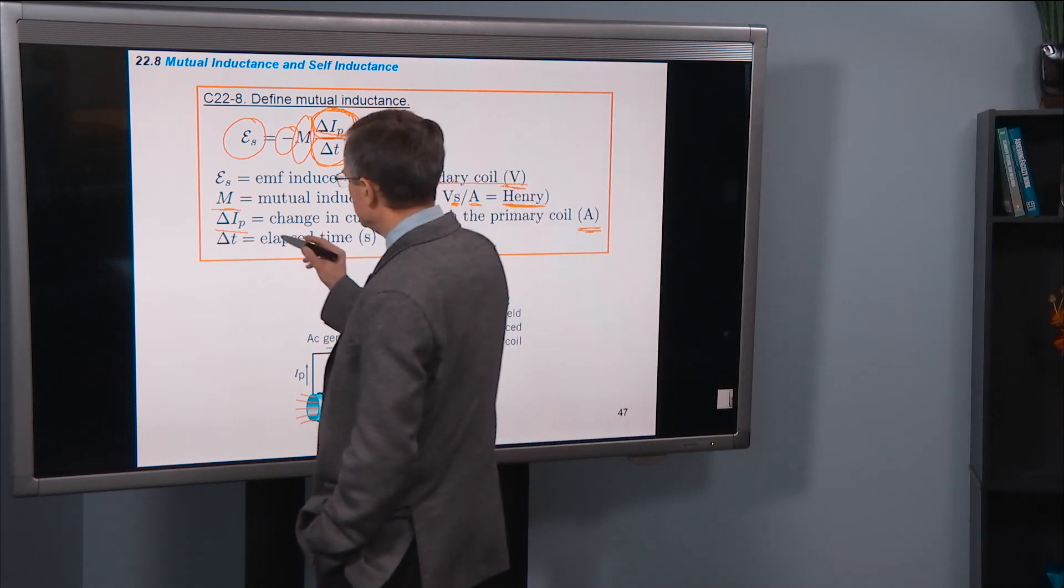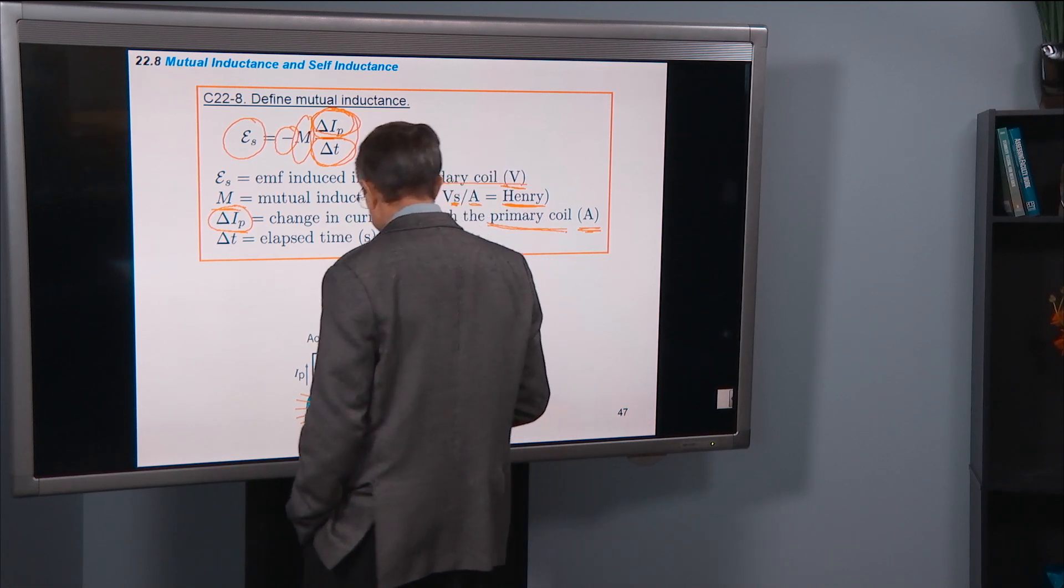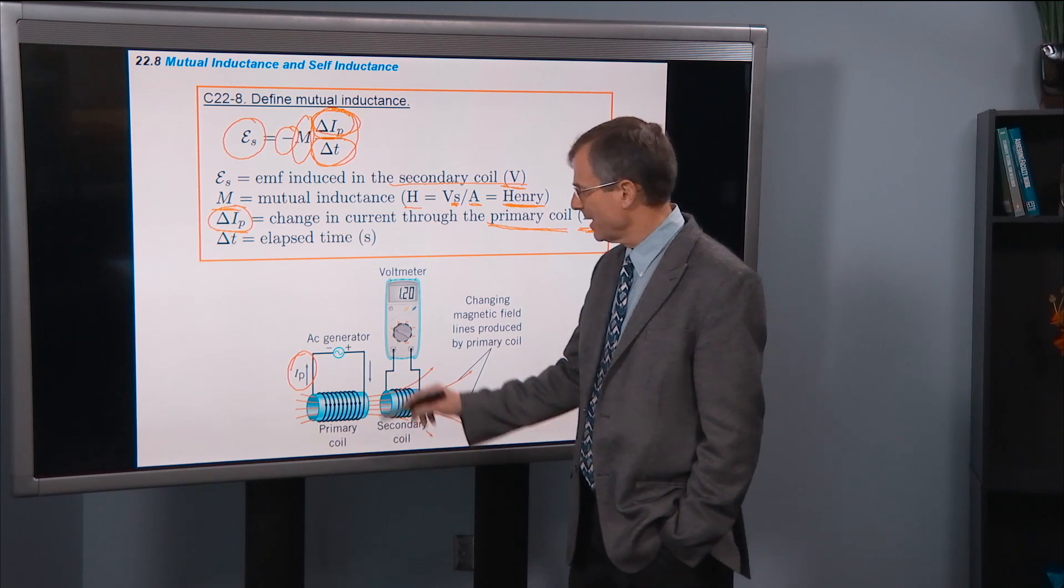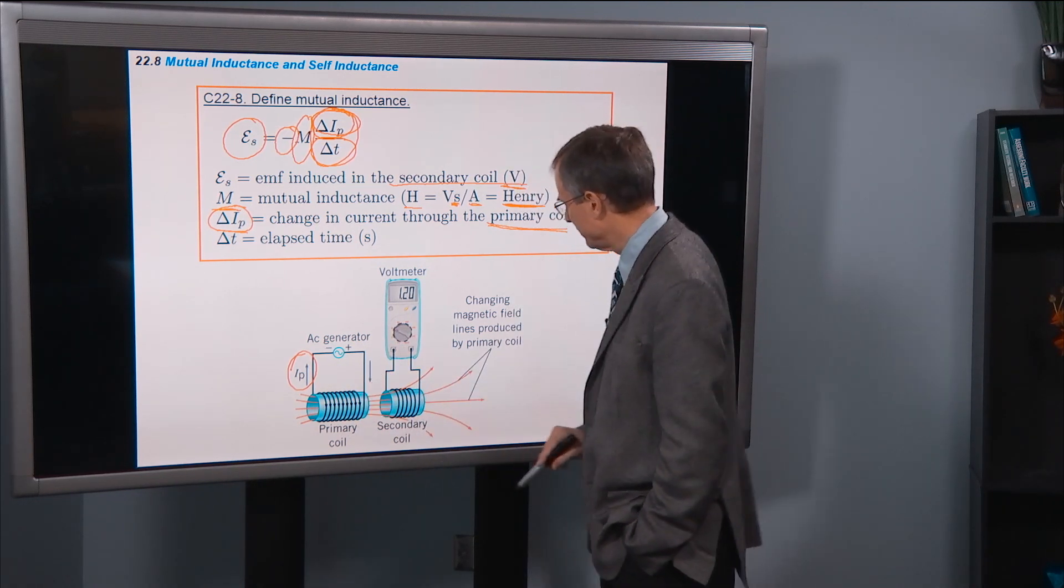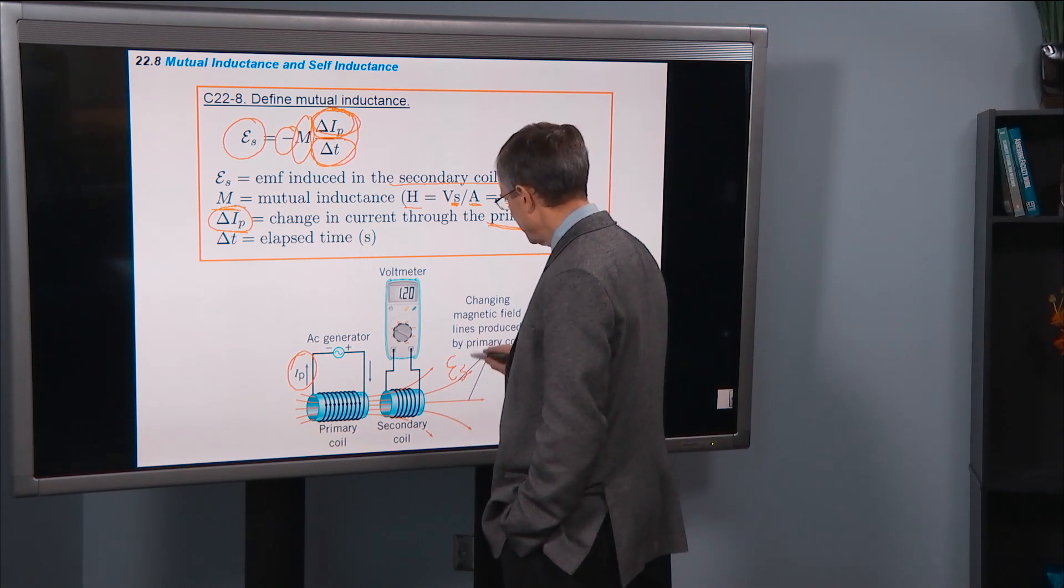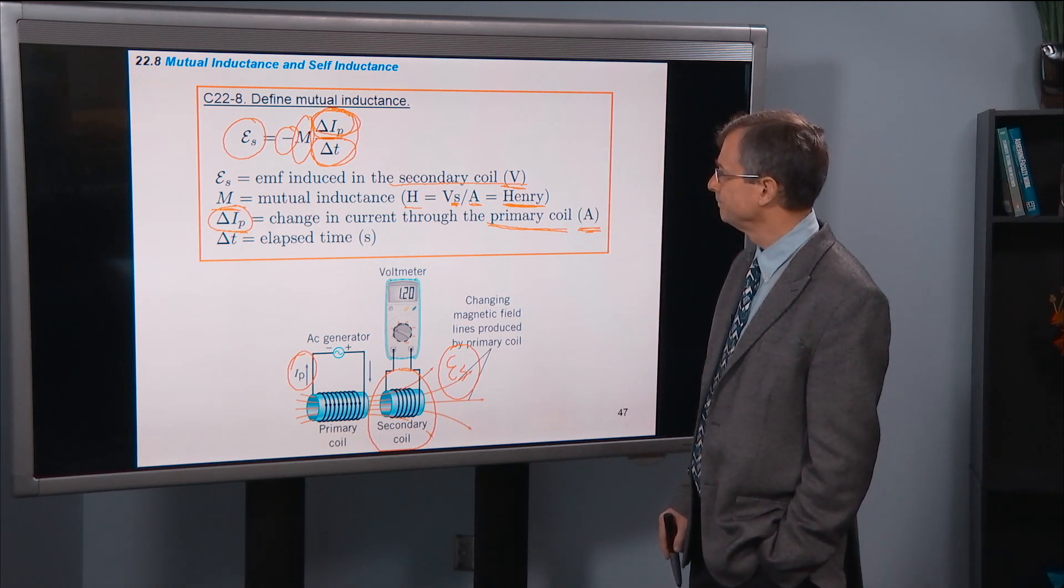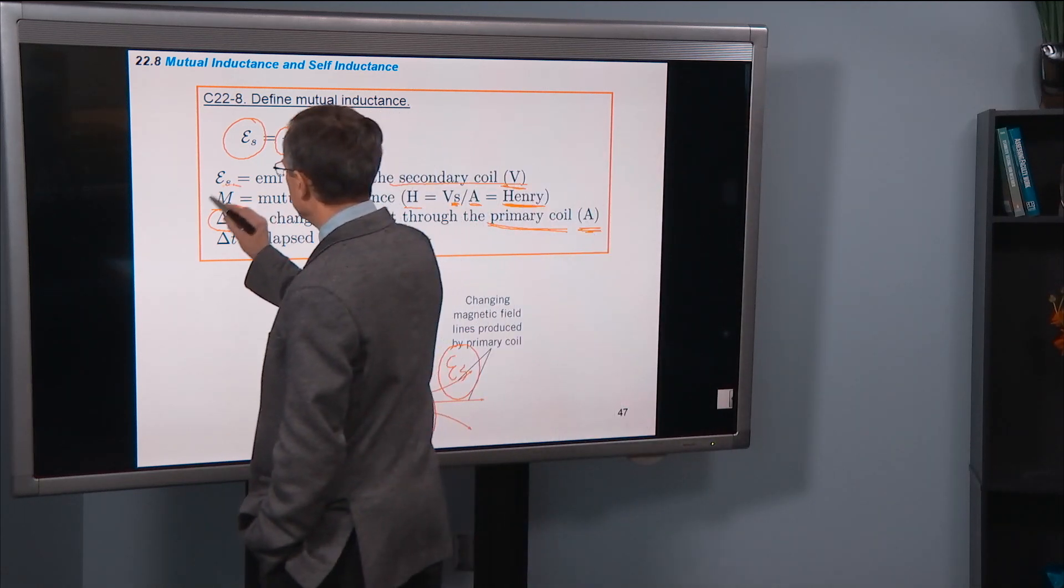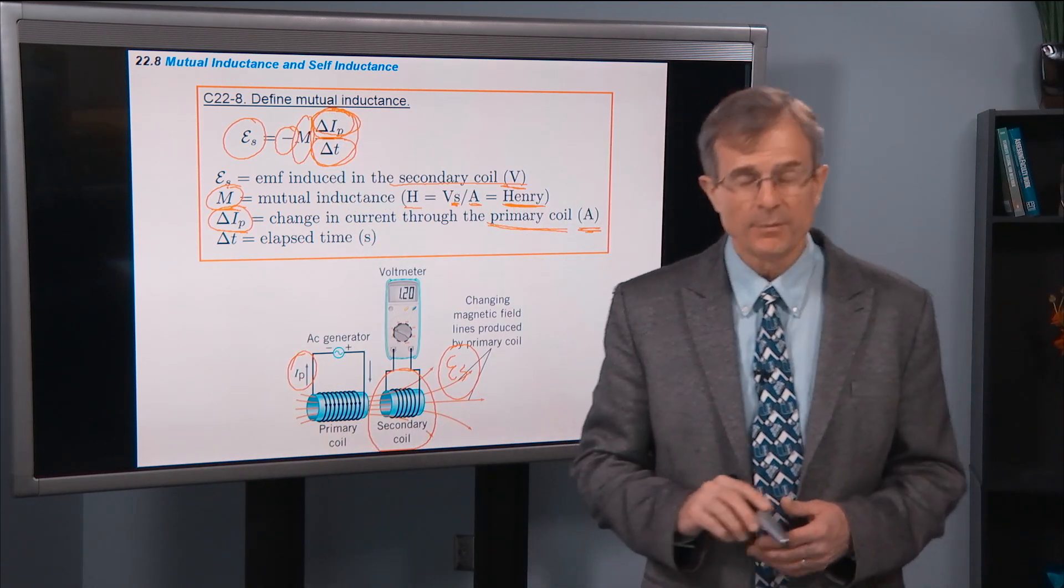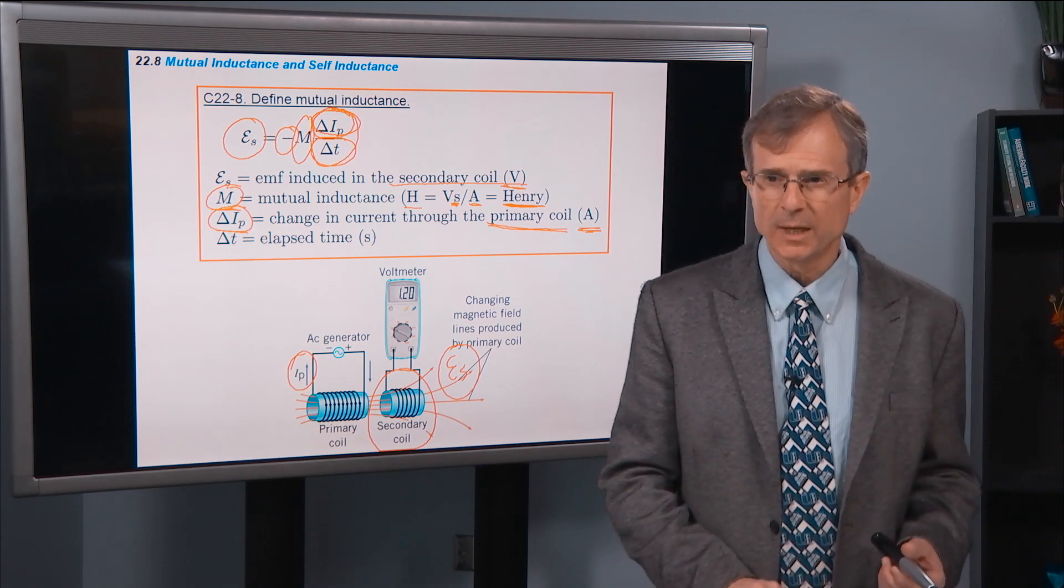Now this delta I is the change in the current through the primary. So going back to here, what we're interested in is the current in the primary. How much that changes with time will affect the EMF induced in this secondary coil. And M really becomes a constant of proportionality. So it's not like the N in Faraday's law. Instead, it's a coefficient of proportionality measured in henrys.